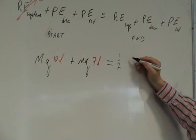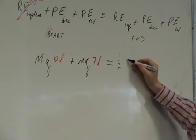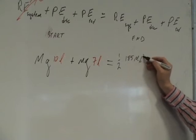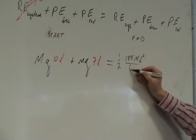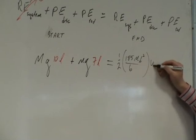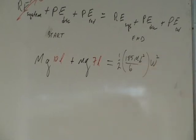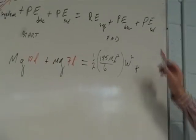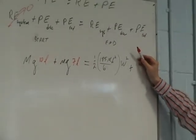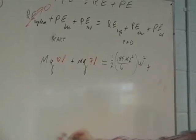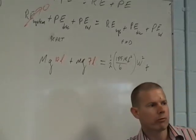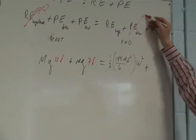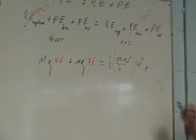185ML squared over 6. So it's a half I omega squared, plus potential energy of the disk. But that's zero, because I put my baseline to the center of gravity, there is no height here. So that bit goes to zero.